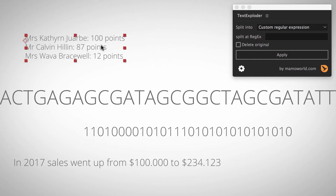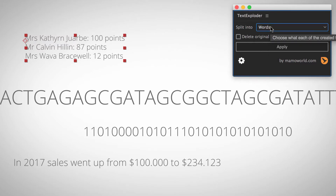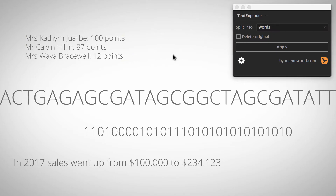Let's say we have this text and we want to split it into individual words, but the words feature is not good enough because there are names inside and we want the first and last name to always stay as one layer, not split into two layers. Here is a DNA string example where I want to split the string into substrings of length three — always cut after three letters — also easily doable with regular expressions.